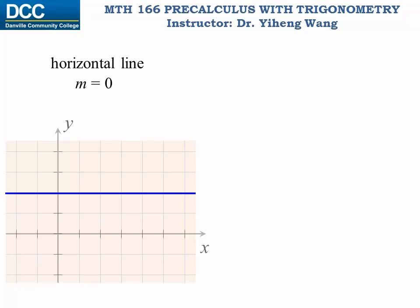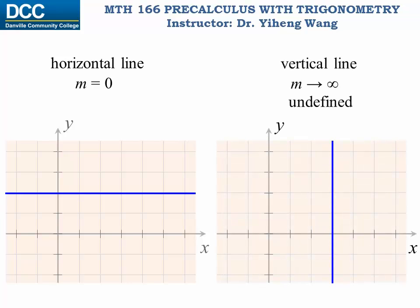And recall the two special cases we talked about earlier. If it is a horizontal line, y is constant no matter how x changes, the slope m is zero. And for a vertical line, no matter how y changes, the change in x is always zero, the slope m approaches infinity or undefined.